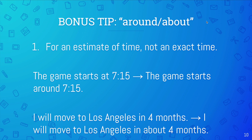Here is a bonus tip. You can use 'around' and 'about' for an estimate of time — a guess, not an exact time. For example, the game starts at 7:15 means the game will start exactly at 7:15. If I said the game starts around 7:15, this means it will start close to 7:15 — it might start at 7:10, it might start at 7:20. If I said I will move to Los Angeles in four months, that means pretty much exactly four months. But if I move in about four months, maybe it will be three and a half months, maybe four and a half months.